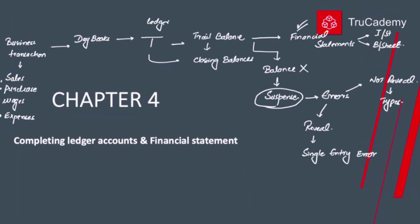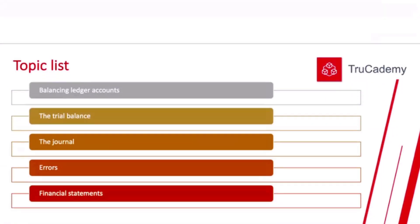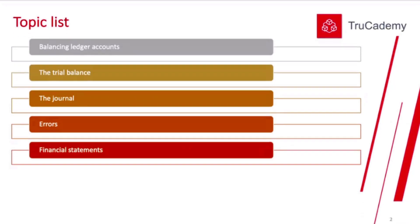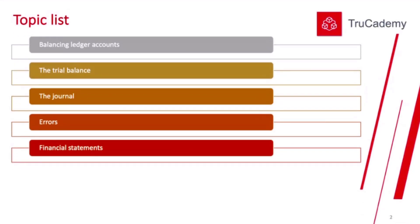Two points are important when completing the accounting cycle: how to prepare financial statements from the trial balance, and if there's a mistake requiring a suspense account, how to rectify it. All of this will be discussed in this part of the syllabus.